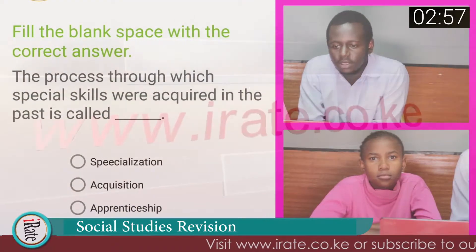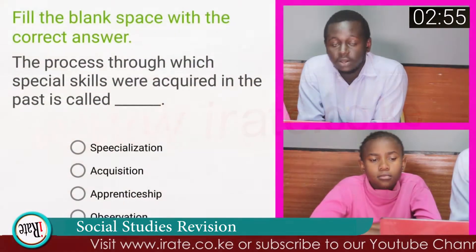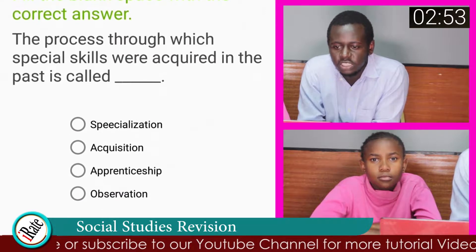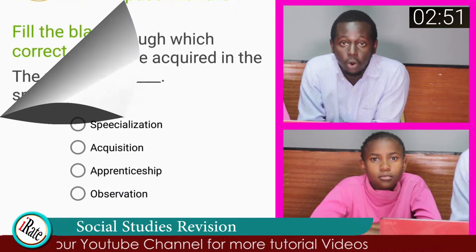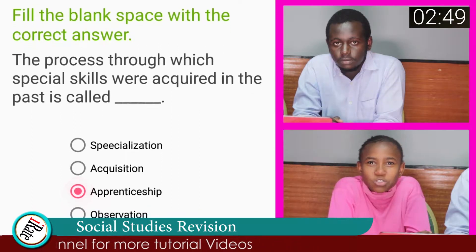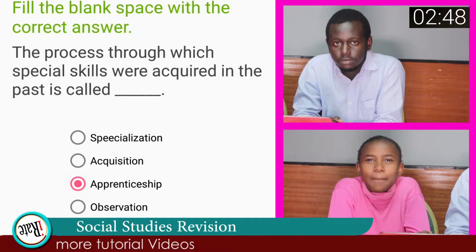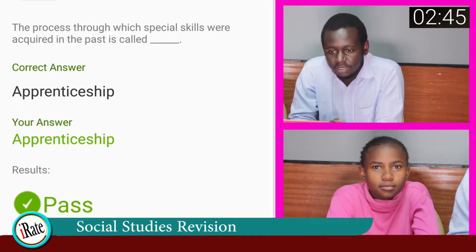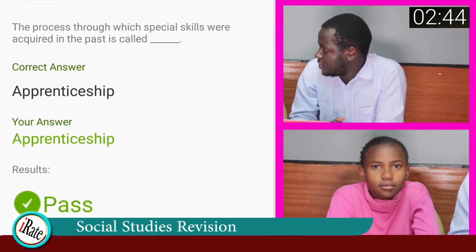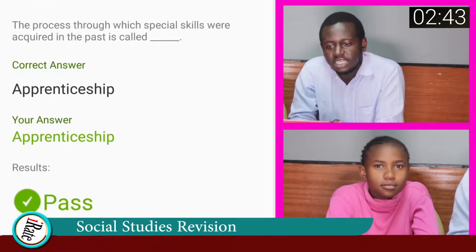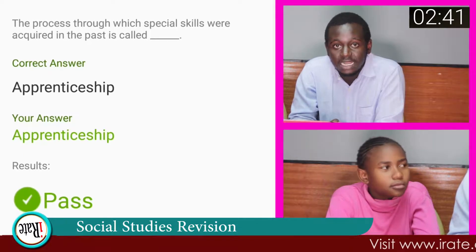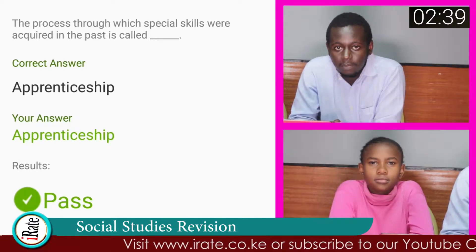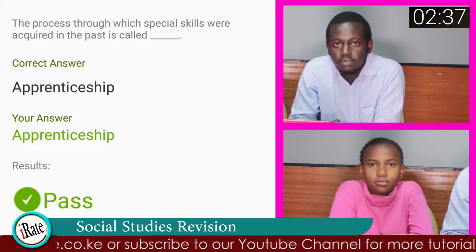Question number three: Fill the blank space — the process through which special skills were acquired in the past is called? The correct answer is Apprenticeship. The student was correct. Apprenticeship was the means by which practical lessons were taught in the olden days, for example during the practice of medicine.